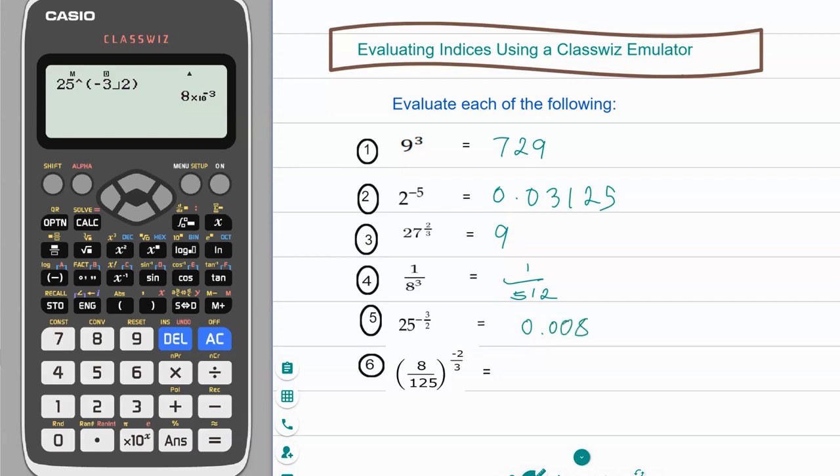For number six, let's clear the screen. You have a fraction so you have 8 and fraction 125, and raised to a negative power so click on that.